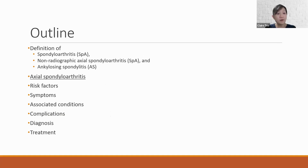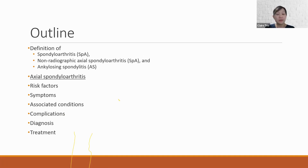This is the outline of the talk. First, a brief definition of spondyloarthritis, also known as SpA, non-radiographic axial spondyloarthritis, and ankylosing spondylitis, also known as AS. Following that, axial spondyloarthritis will be covered, including risk factors, symptoms, associated conditions, complications, diagnosis, and treatment.